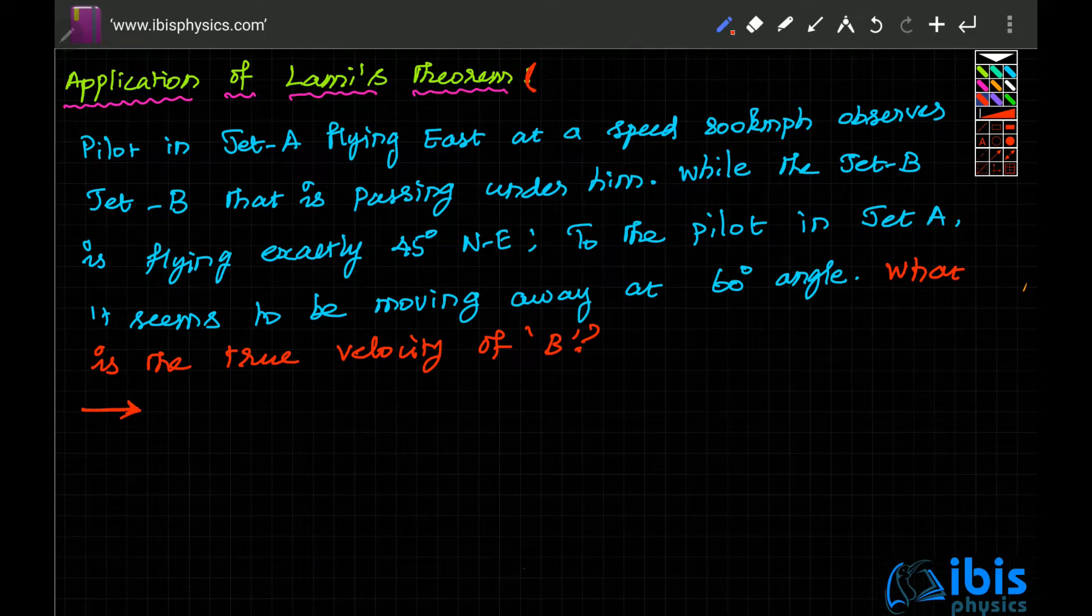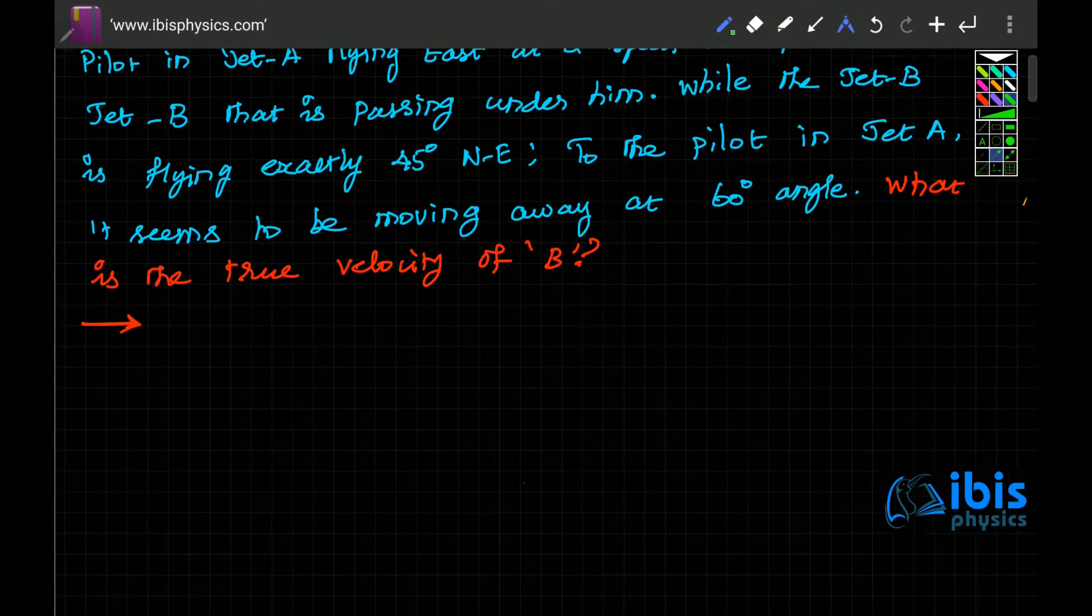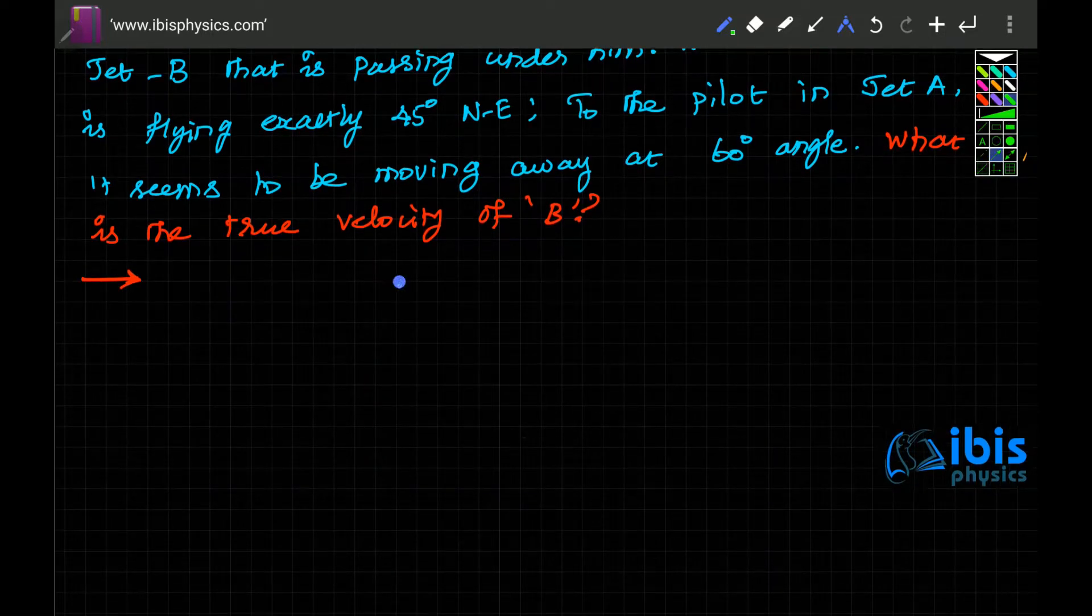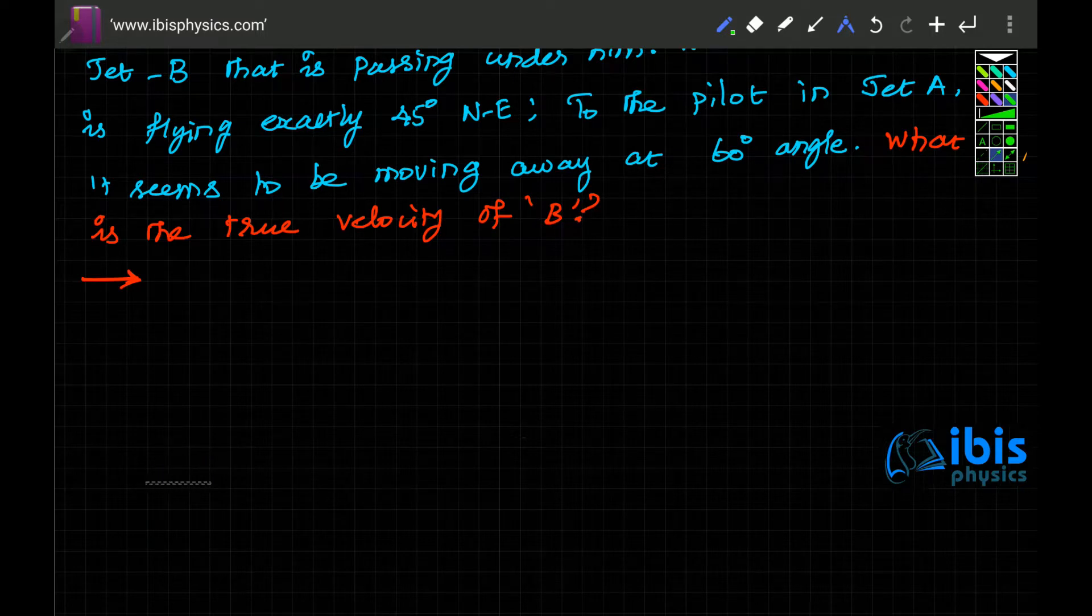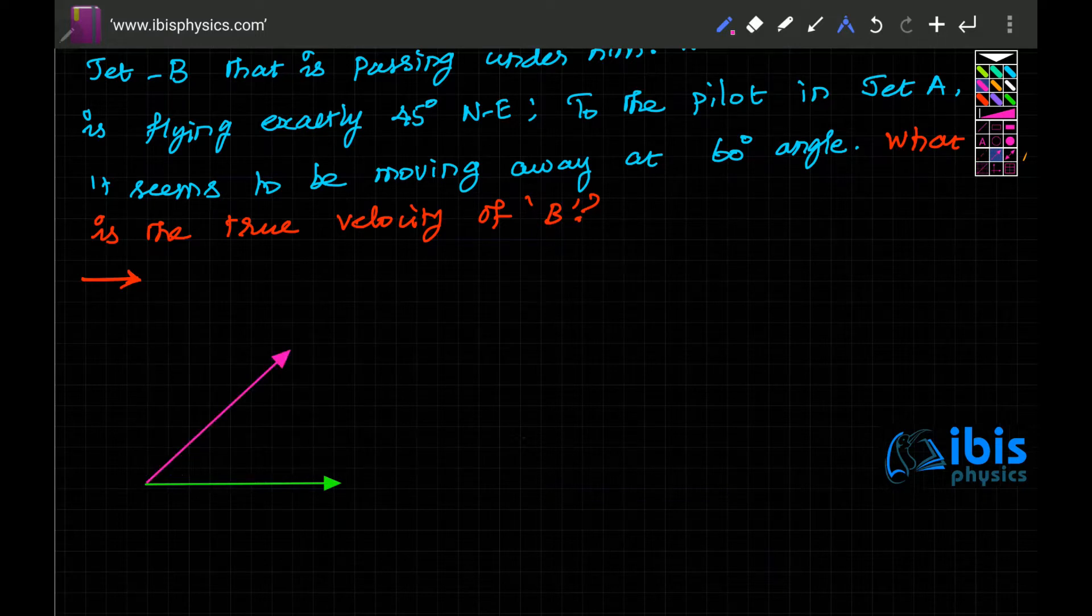Here there are two jets, jet A and jet B. Let us try to visualize it. If this is north and we use atlas notation, jet A is flying east this way. But jet B is actually flying 45 degrees north of east, so this way, exactly 45 degrees.